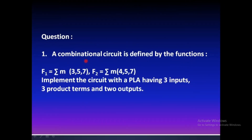Let us go ahead with the problem in case of PLA. A combinational circuit is defined by the functions: F1 = Σm(3, 5, 7) and F2 = Σm(4, 5, 7). Implement the circuit with a programmable logic array having three inputs, three product terms, and two outputs.